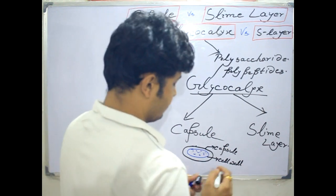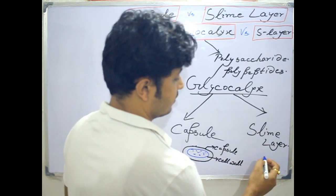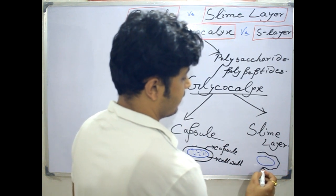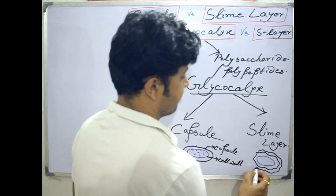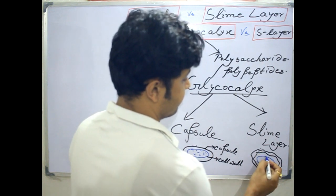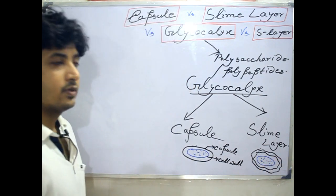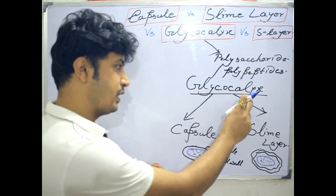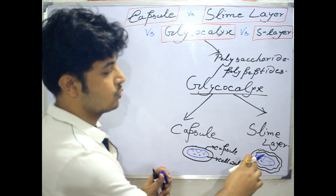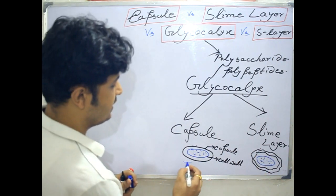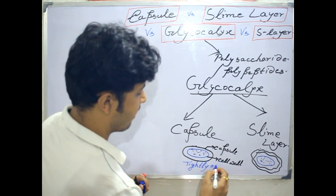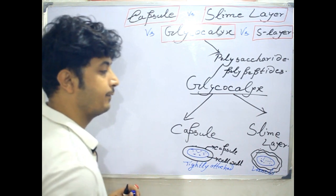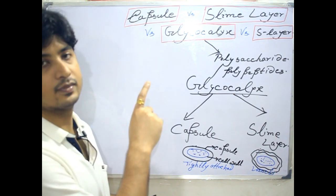In case of slime layer, if you draw the same thing, the point here is that when the layer is tightly attached you can see that the shape is very thick — that is the capsule. The glycocalyx layer is thick in the case of capsule, but in case of slime layer it is not so thick and it is loosely attached.